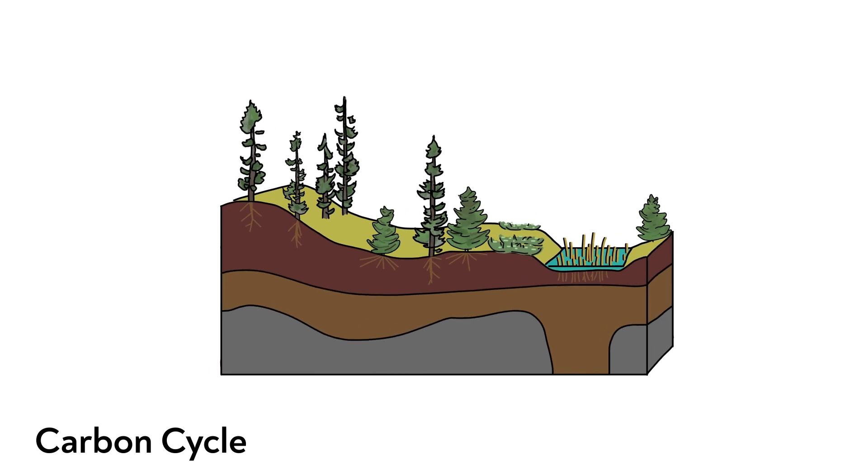The carbon cycle represents the movement of carbon through land, water, air, and all living things.